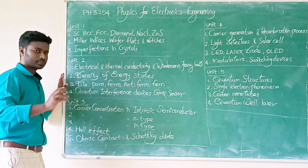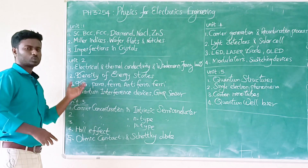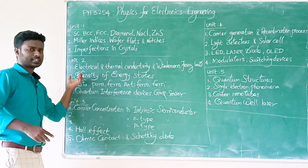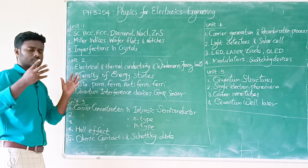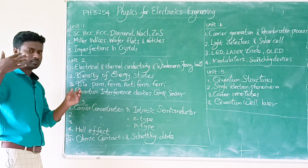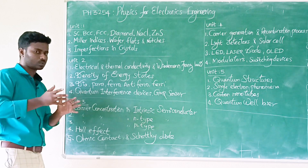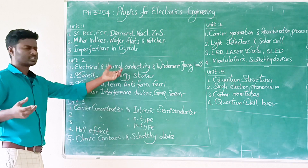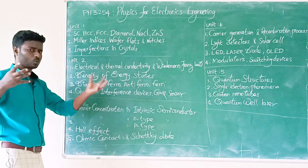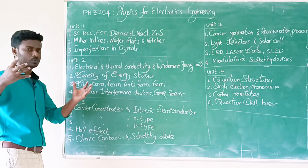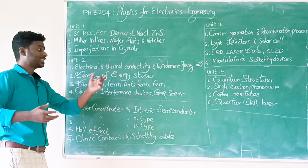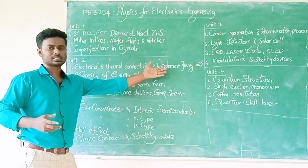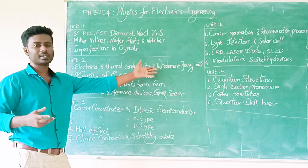Unit 2 covers electrical conductivity and thermal conductivity. For electrical conductivity: under forward bias, electrons move and produce current. For thermal conductivity: heat flows from a hot place to a cold place. These can be related through the Wiedemann-Franz law.